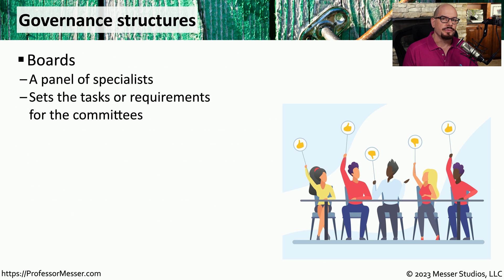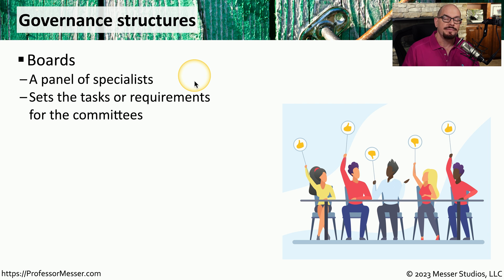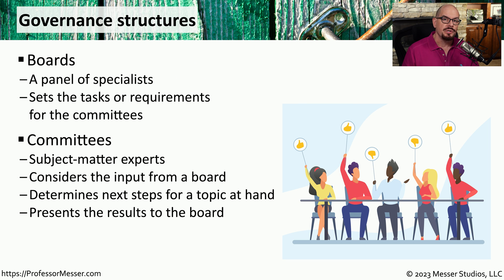The governance structure for many organizations starts with a board — sometimes a board of directors. It's a panel of specialists that set the tasks or series of requirements for a committee to follow. These are usually very broad objectives, and it's left up to the committee to determine the best way to implement those objectives. Committees usually consist of subject matter experts and may include a member of the board. The committee will take direction from the board on what task needs to be accomplished, then work on putting the next steps together to meet those goals.